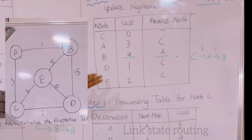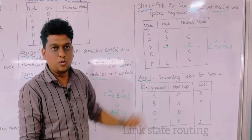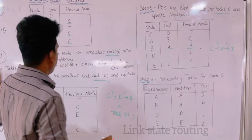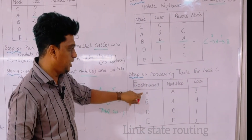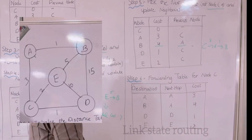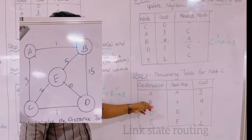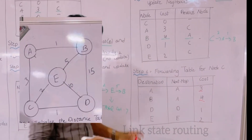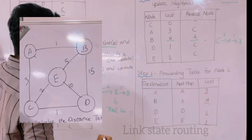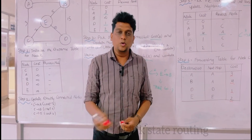Now we check whether this is the updated shortest path from C to all other nodes. This is the minimum distance from C to all other nodes. This is the final routing table for node C. The destination from C: C to A is directly connected with minimum distance 3; for B it moves through A with minimum distance 4; for D it is directly connected with distance 1; and E is also directly connected with distance 2. By this way we can find the shortest path from one node to all other nodes.